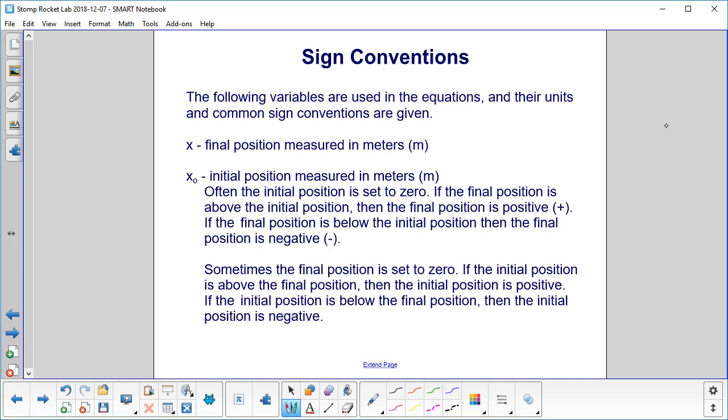Sign conventions are very important so the math will match what's happening in the physical world. So here's what we'll be using in this lab. x will be the final position and it'll be measured in meters. The initial position, x0, is also measured in meters. Often the initial position is set to zero. If the final position is above that initial position, so here's our x0 and here's x, then the final position is positive. If the final position is below the initial position, then it's negative.